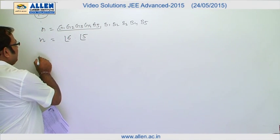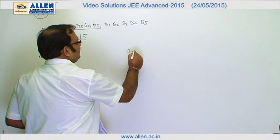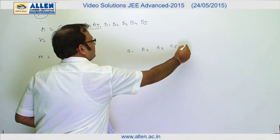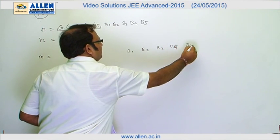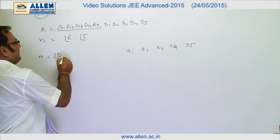So while counting m, what we will do is we will first arrange all the 5 boys in the line. Arranging 5 boys in the line makes 5 factorial ways.